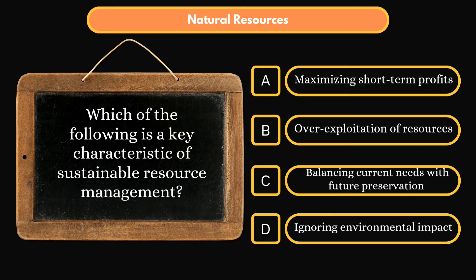Which of the following is a key characteristic of sustainable resource management? Option A: Maximize short-term profits. Option B: Overexploitation of resources. Option C: Balancing current needs with future preservation. Option D: Ignoring environmental impact. Correct answer is Option C: Balancing current needs with future preservation.